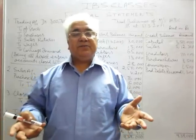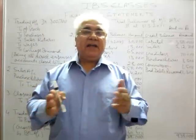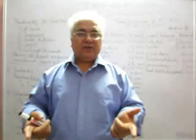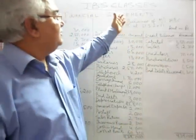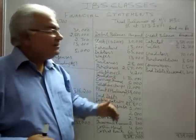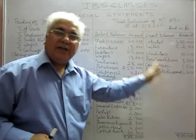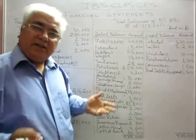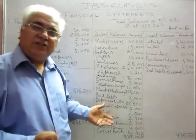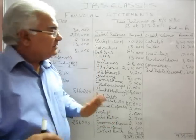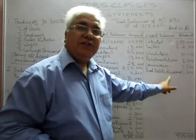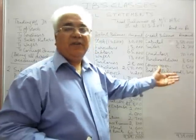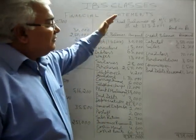Now what are closing entries? All the accounts which pertain to incomes and expenses are to be closed to either trading account or to profit and loss account. The trial balance has two sides — debit side and credit side. All the accounts which appear on the debit side of the trial balance are either assets or expenses or losses. Similarly, all the accounts which appear on the credit side of trial balance are either liabilities or incomes or revenues.